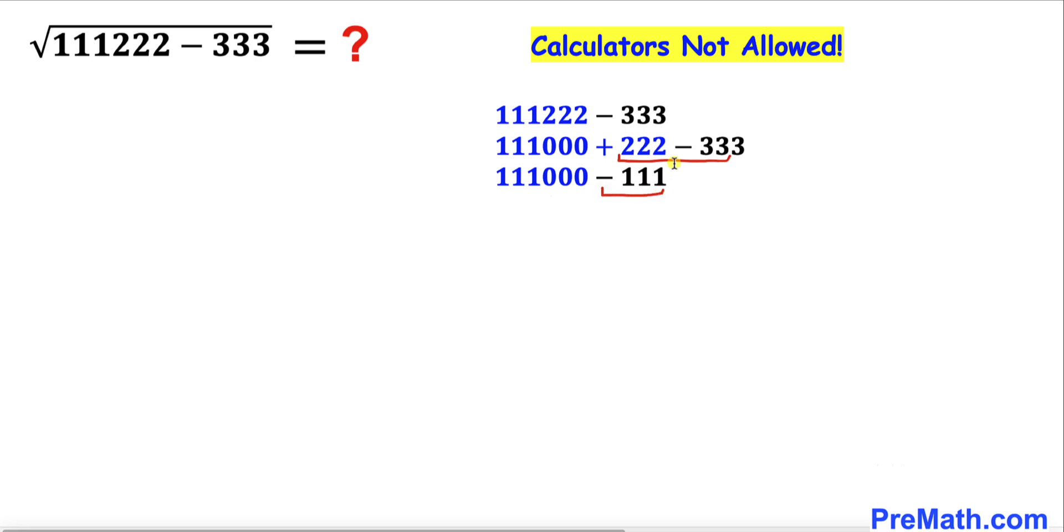In this next step I am going to factor out 111. 1000 - 1 is going to give us 999. Now 999 could be written as 111 times 9, and this could be written as 111² and 9 could be written as 3².